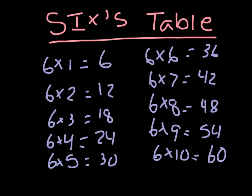Now let's go on to our sixes table. It goes: 6 times 1 is equal to 6, 6 times 2 is equal to 12, 6 times 3 is equal to 18, 6 times 4 is equal to 24, 6 times 5 is equal to 30, 6 times 6 is equal to 36, 6 times 7 is equal to 42, 6 times 8 is equal to 48, 6 times 9 is equal to 54, and 6 times 10 is equal to 60.